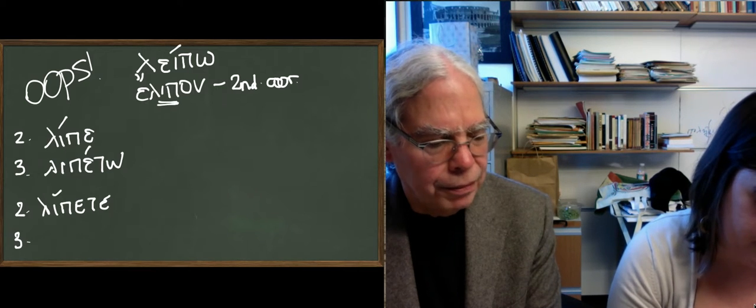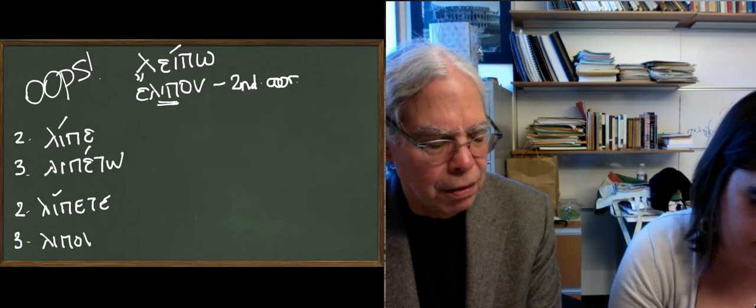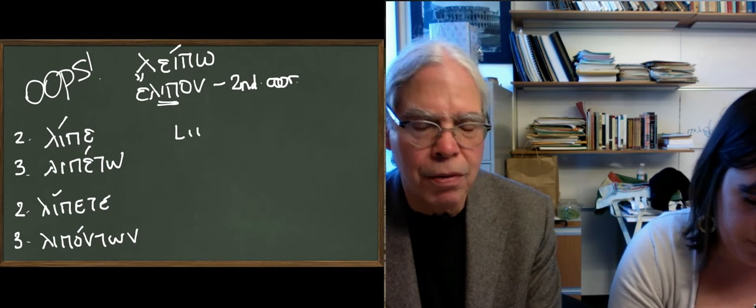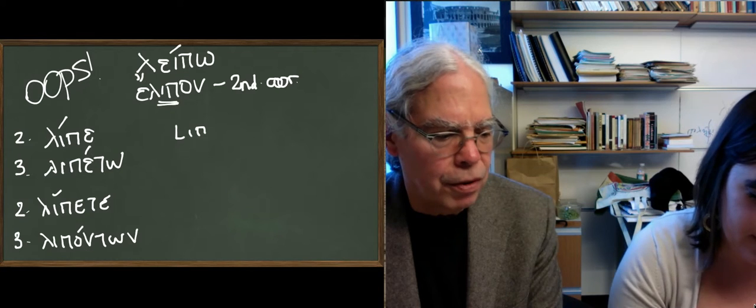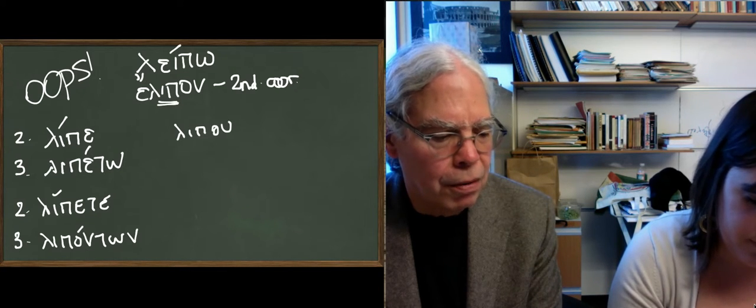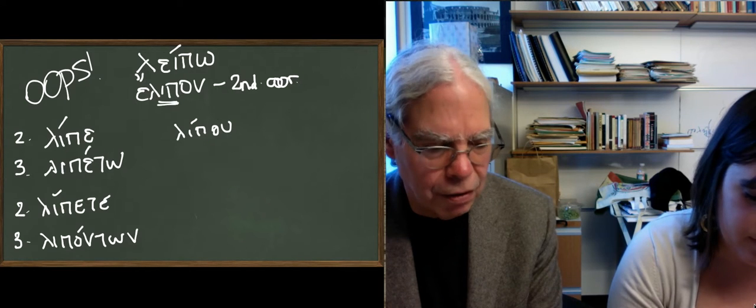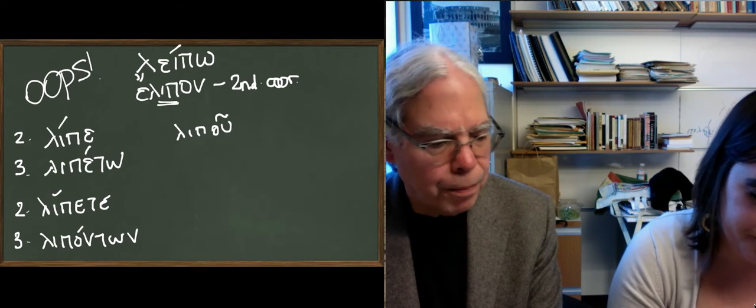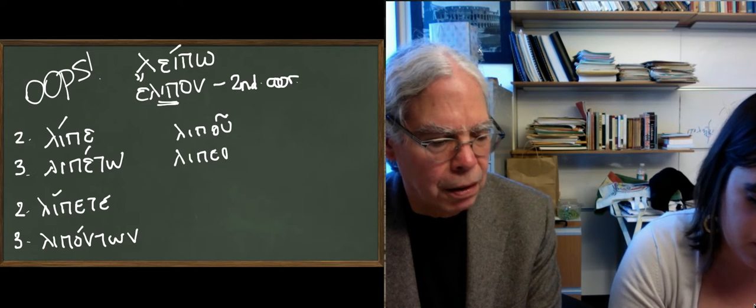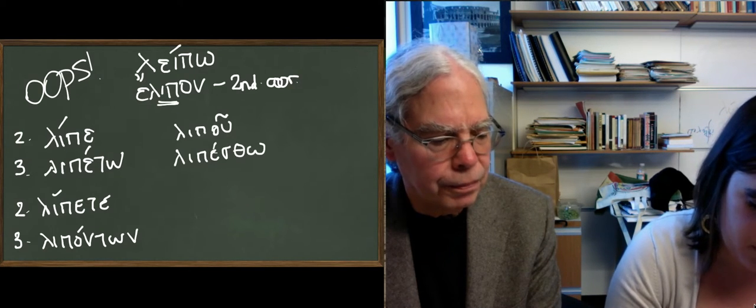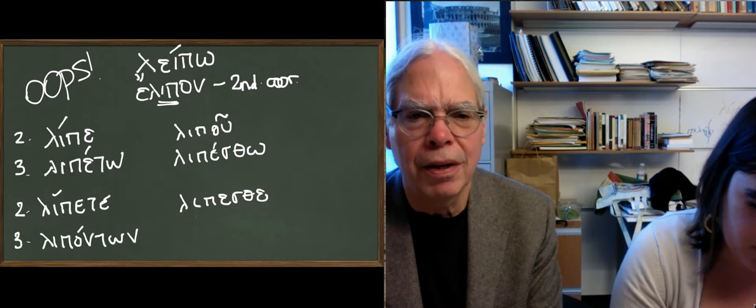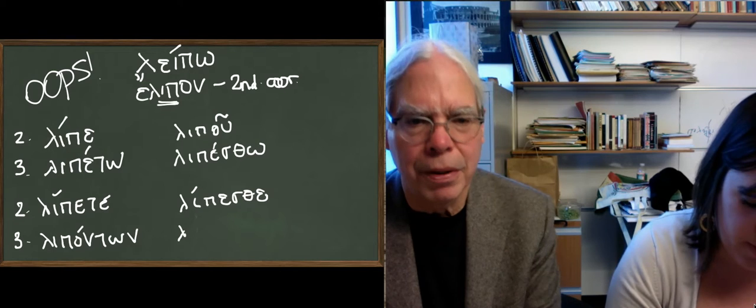In the middle, it's the same - it's lipu and lipeto, and it's also the present imperative ending. So lipu has a circumflex, I think, over the ou, yeah. And lipeso, and lipeto and liponton. And liponton, is that right? Yes, it's liponton.